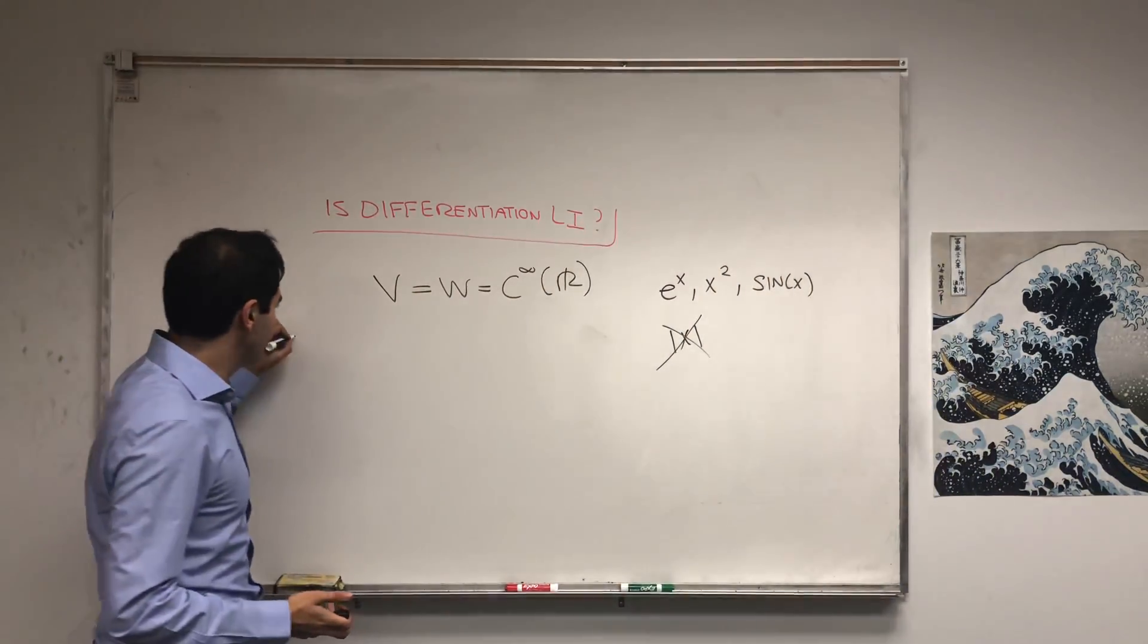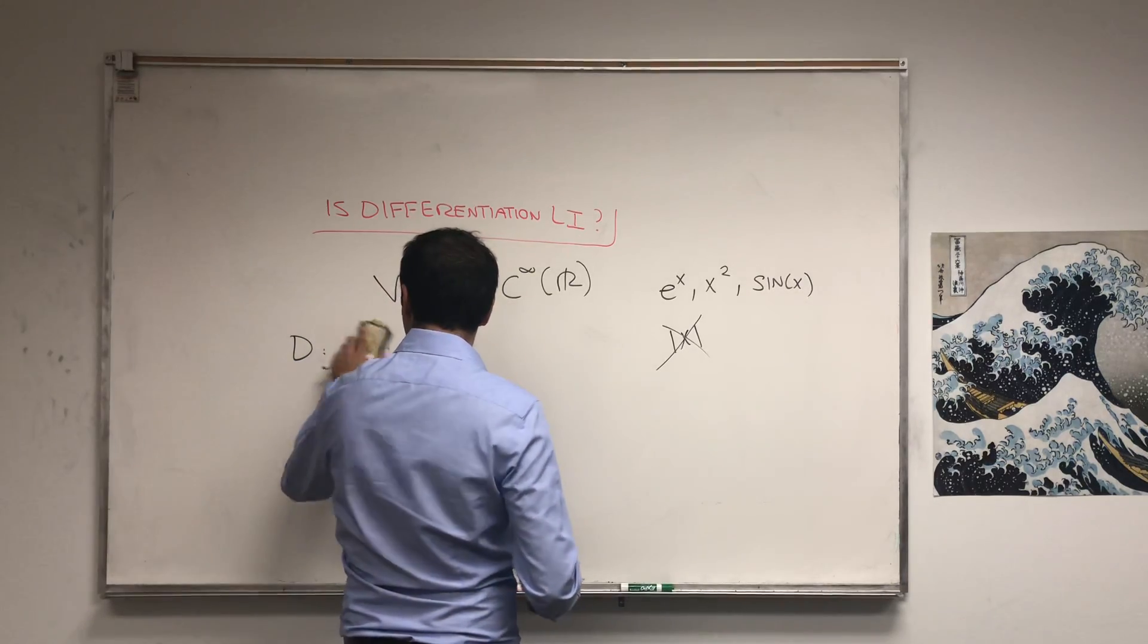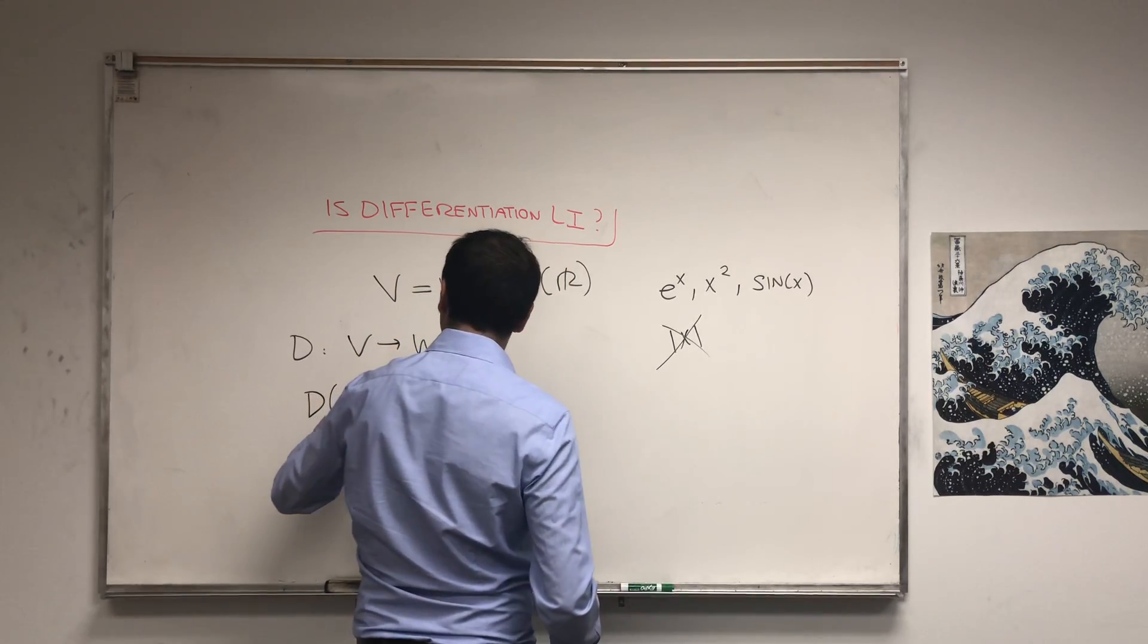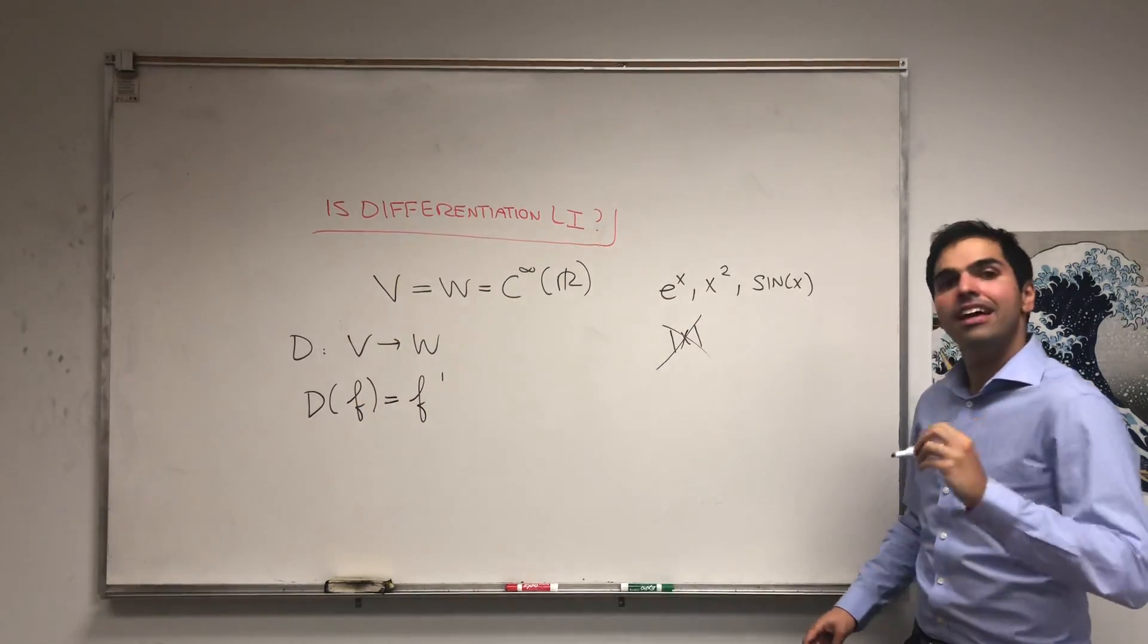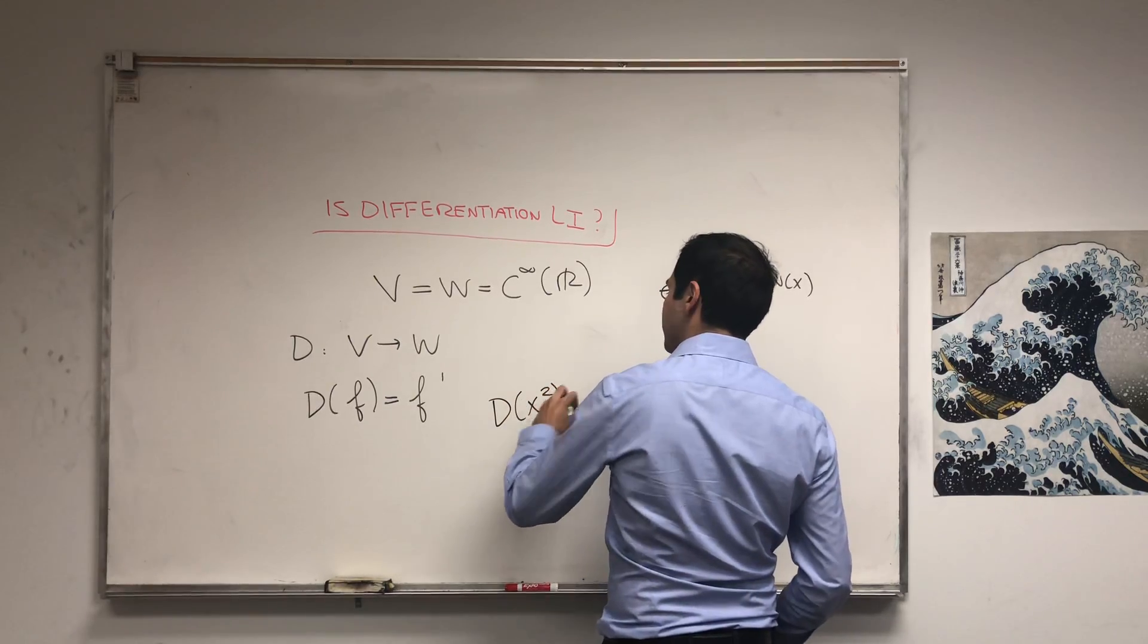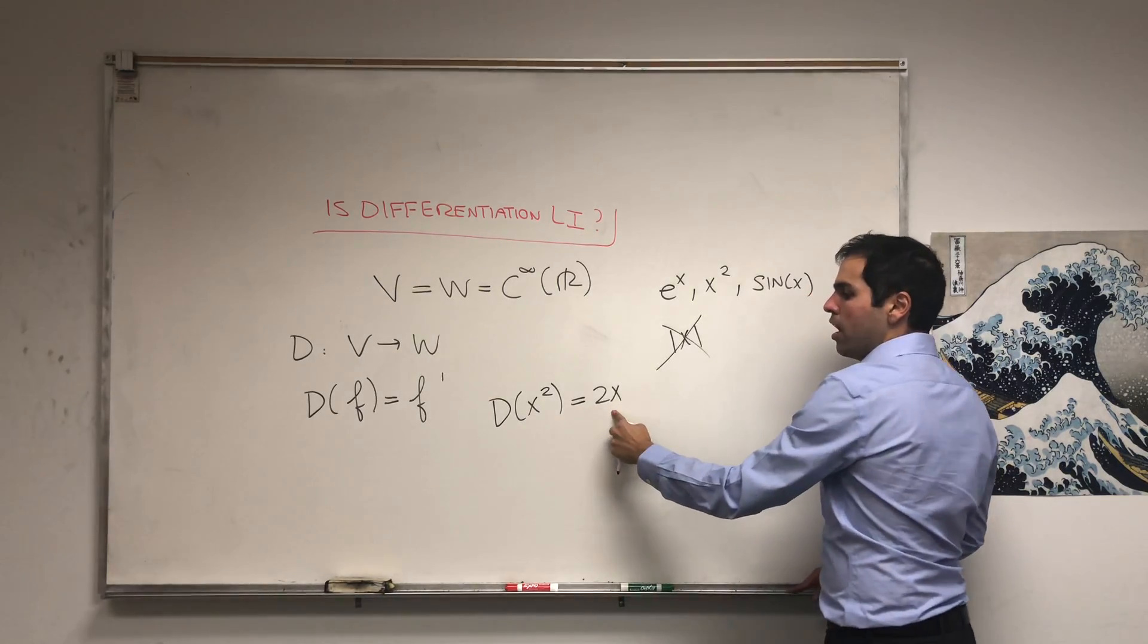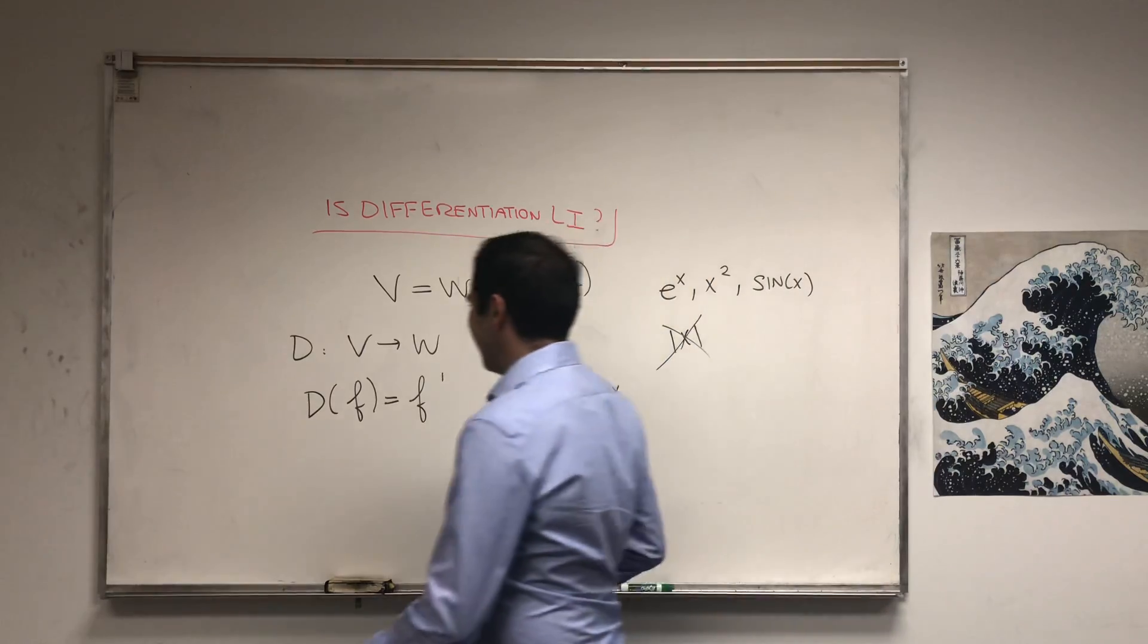And consider the linear transformation D from V to W, just defined by Df is just f'. So it just takes a function as input and spits out its derivative. For example, D of x² should be 2x, and that makes sense. This is infinitely differentiable, and this is also infinitely differentiable, so it's good.